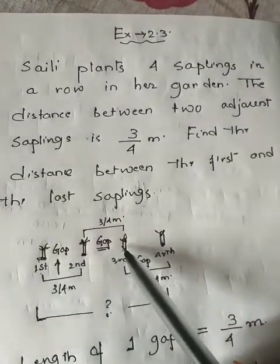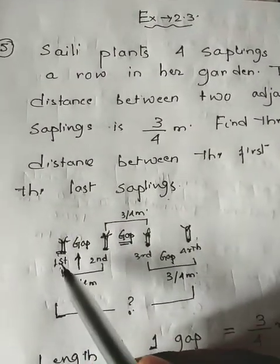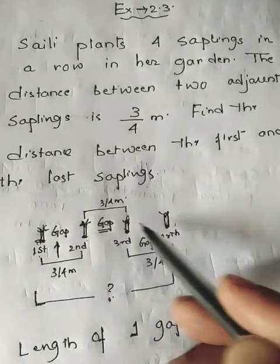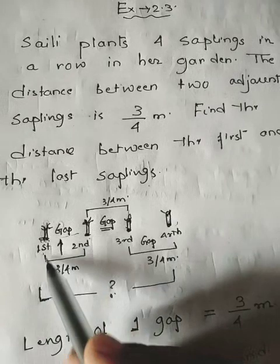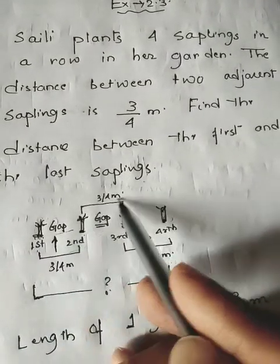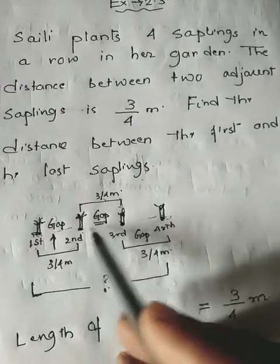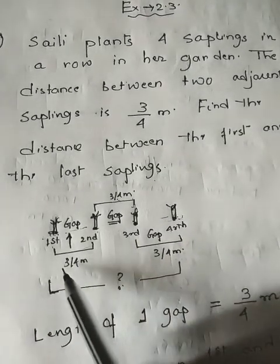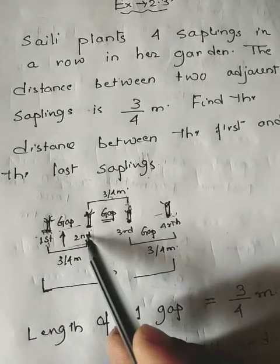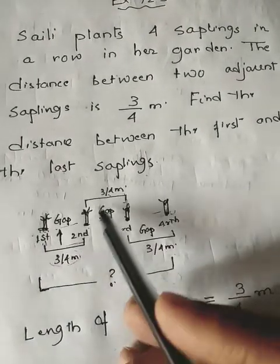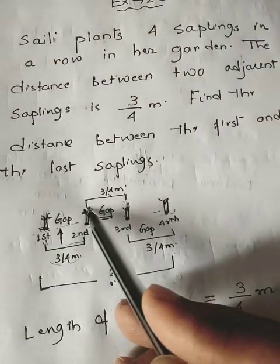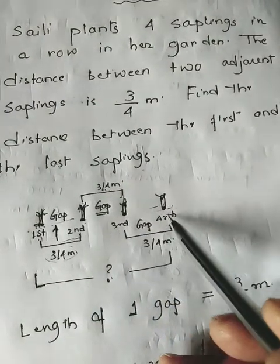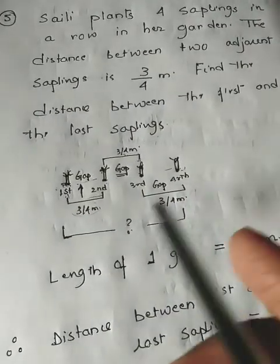I have drawn four plants — sorry for the drawing, I'm not that good at it. These are the four plants: first, second, third, and fourth. Between each plant there is a gap. How many gaps are there? One, two, and three — there are three gaps between four saplings. Each gap is 3/4 meter.